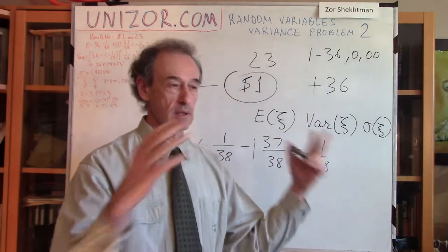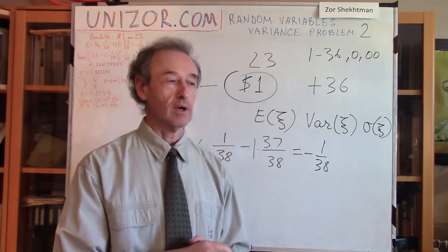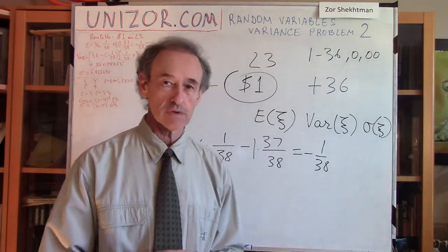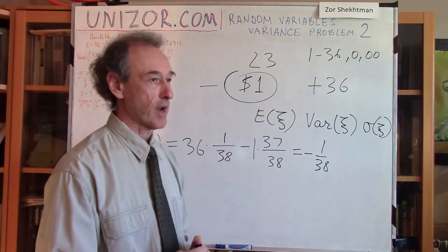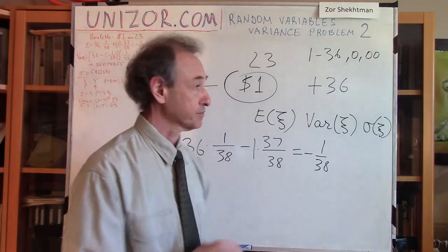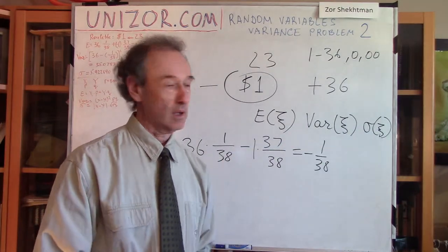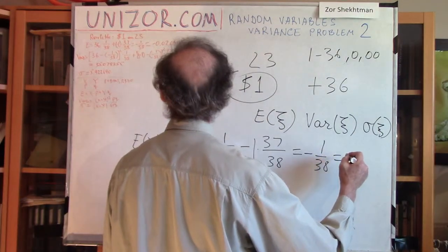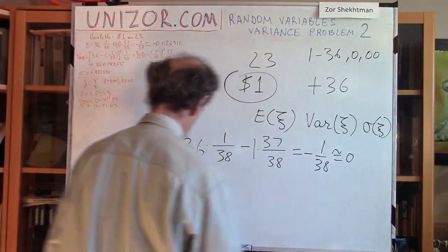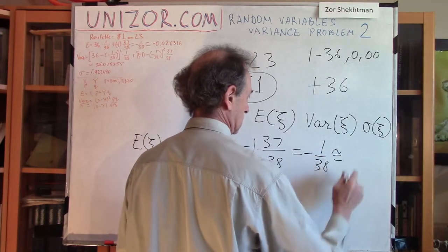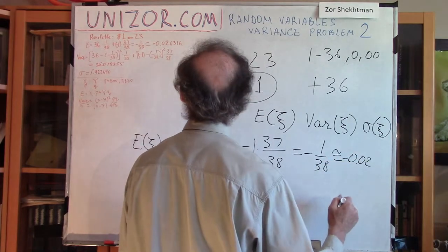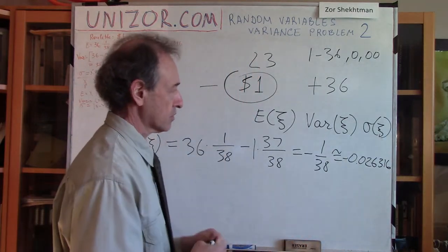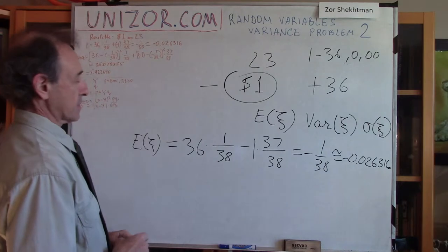Now, how large is the dispersion — the difference between the values that actually occur in practice and the expected value? That's what variance and standard deviation will tell us. In decimal, the expectation is approximately minus 0.026316.